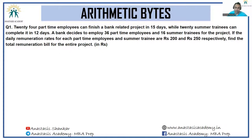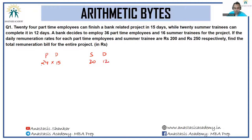24 part-time employees can finish a bank-related project in 15 days, while 20 summer trainees can complete it in 12 days. So when looking at part-time employees it is roughly 360 effective days, and for summer trainees it is effectively 240 days.